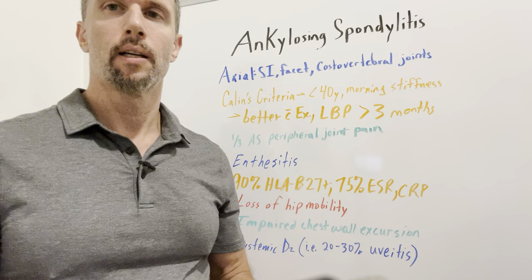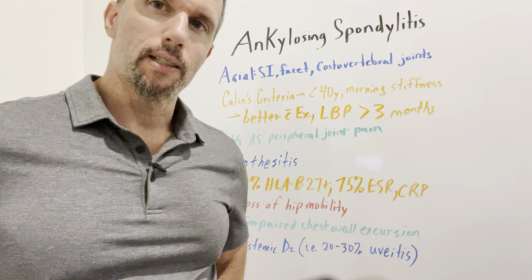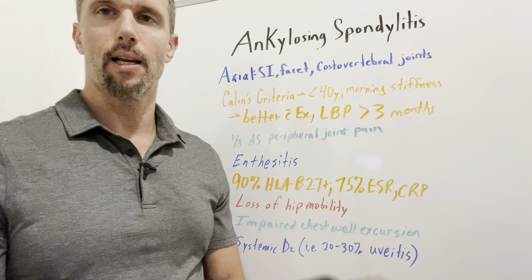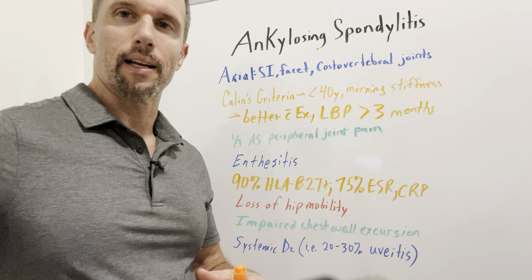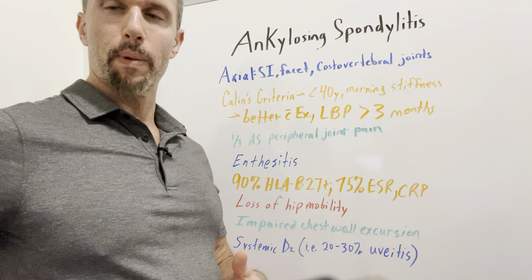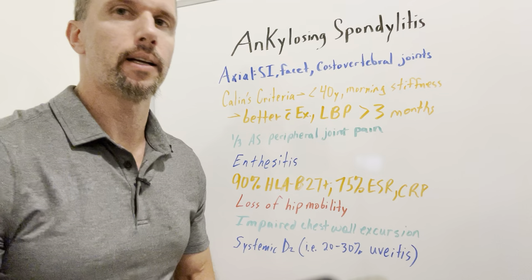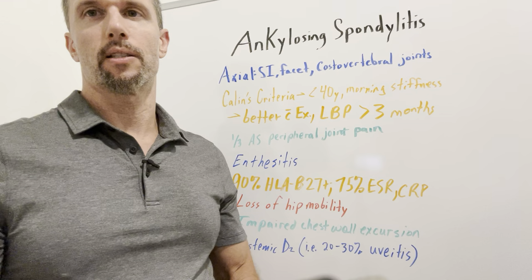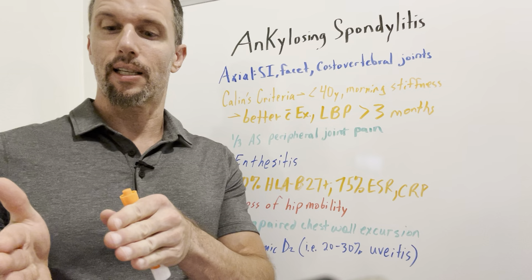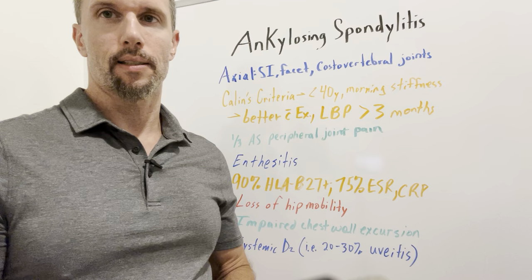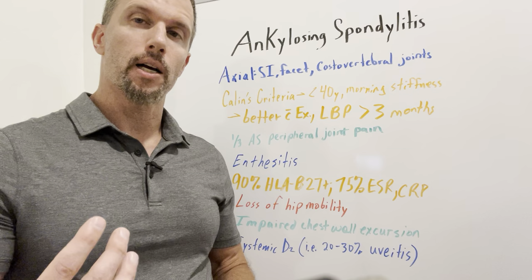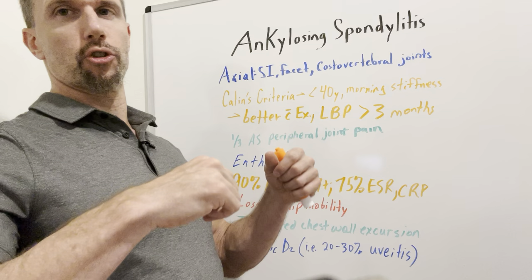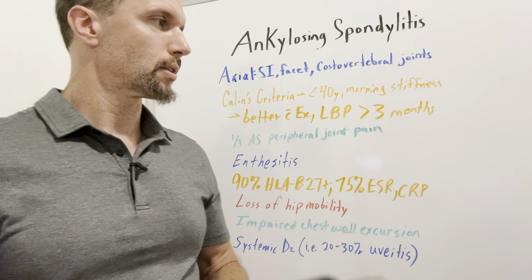Another test is called Schober's test, where you mark two spots 15 centimeters apart on the low back, then ask the person to touch their toes and stretch as much as they can. With ankylosing spondylitis, as things fuse, they lose their lumbar lordosis — that natural forward curve in the low back — and develop increased thoracic kyphosis and forward head. They don't get good reversal of lordosis when stretching down. If the distance increases less than 5 centimeters from that 15, meaning it doesn't reach 20, that's a strong sign of ankylosing spondylitis. In physical therapy, patients can try to maintain good posture — for example, lying on a foam roller horizontally for a thoracic extension stretch to offset the tendency toward thoracic kyphosis.